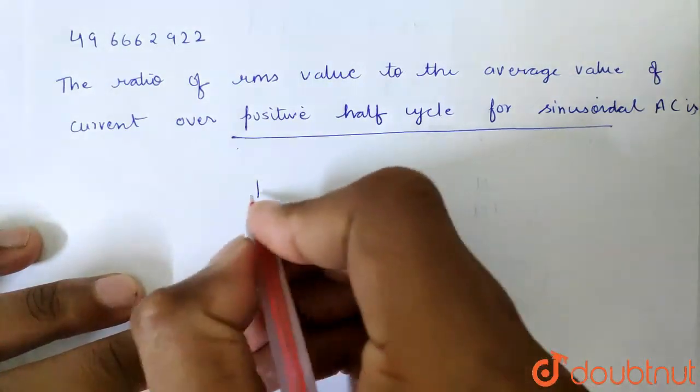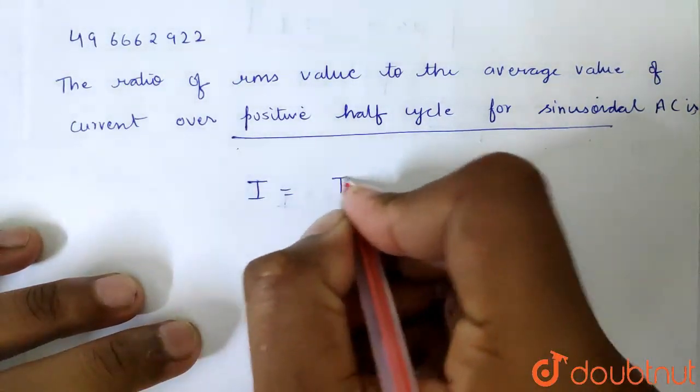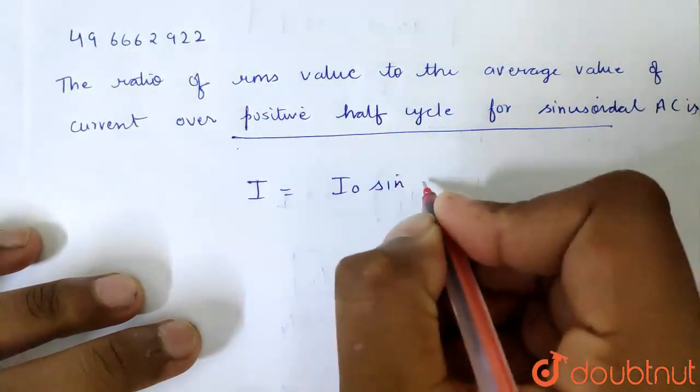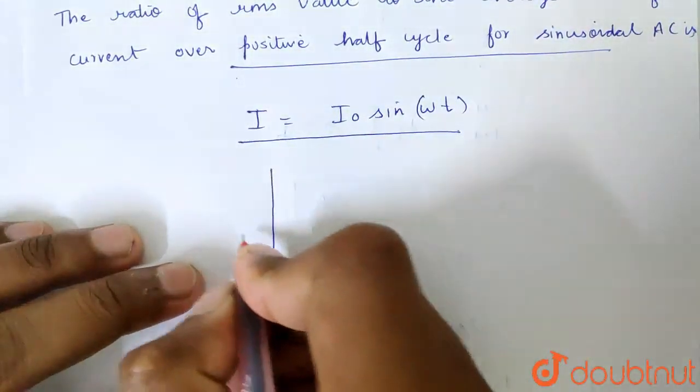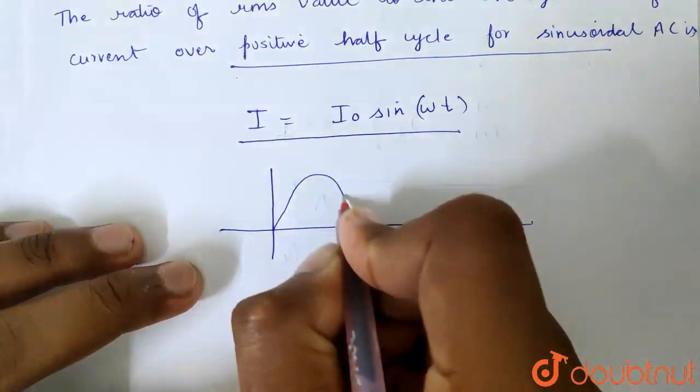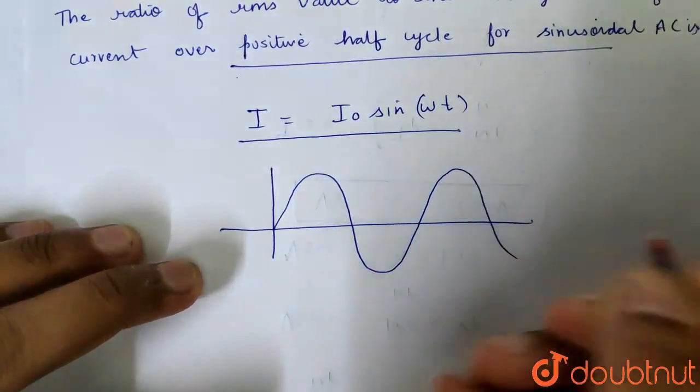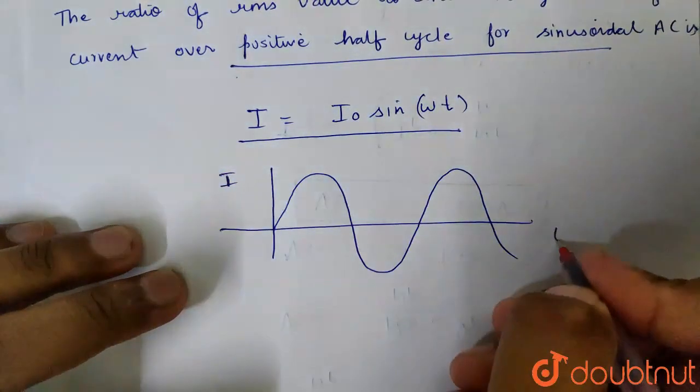We know that the sinusoidal function is I equals I0 sin omega t. This is the general expression I can write. So if I have a wave, it will be like this sinusoidal. This is the current wave with respect to time.